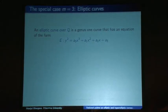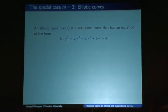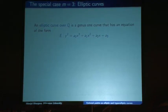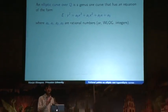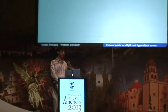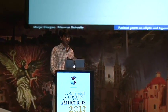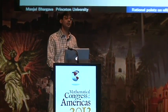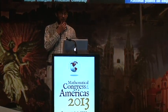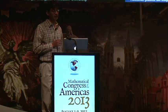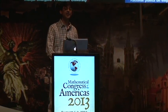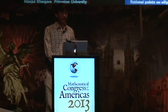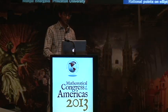Elliptic curves have played a very major role in number theory — they're the smallest case we still really don't understand. An elliptic curve over ℚ is a genus-1 curve with an equation of the form y² = a₀ + a₁x + a₂x² + a₃x³, where the coefficients are rational numbers, or without loss of generality, integers. This case is special for two reasons: it's the first case where we don't know in general how to find all rational solutions, and it's the only case where the set of rational points has an extra group structure.